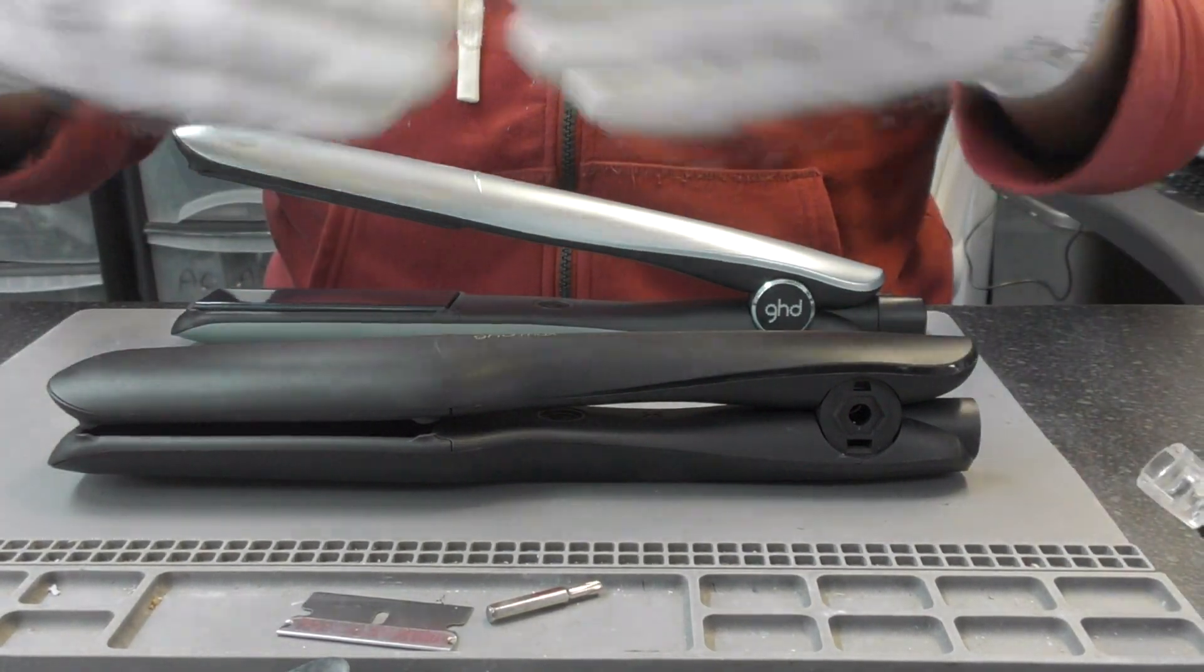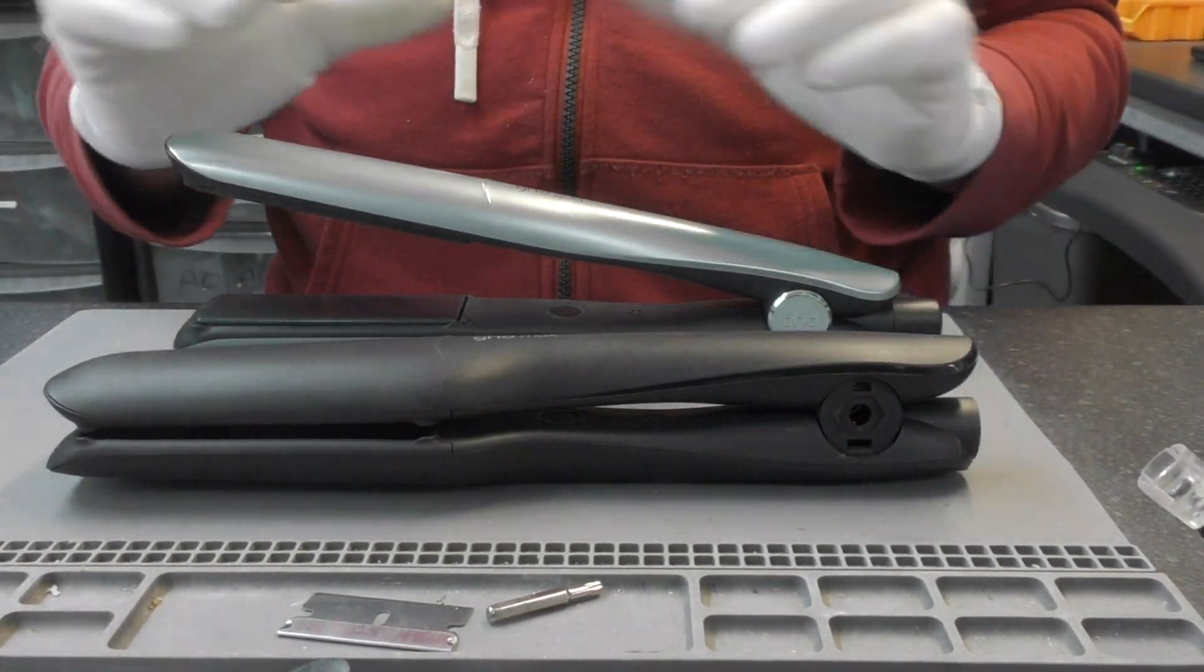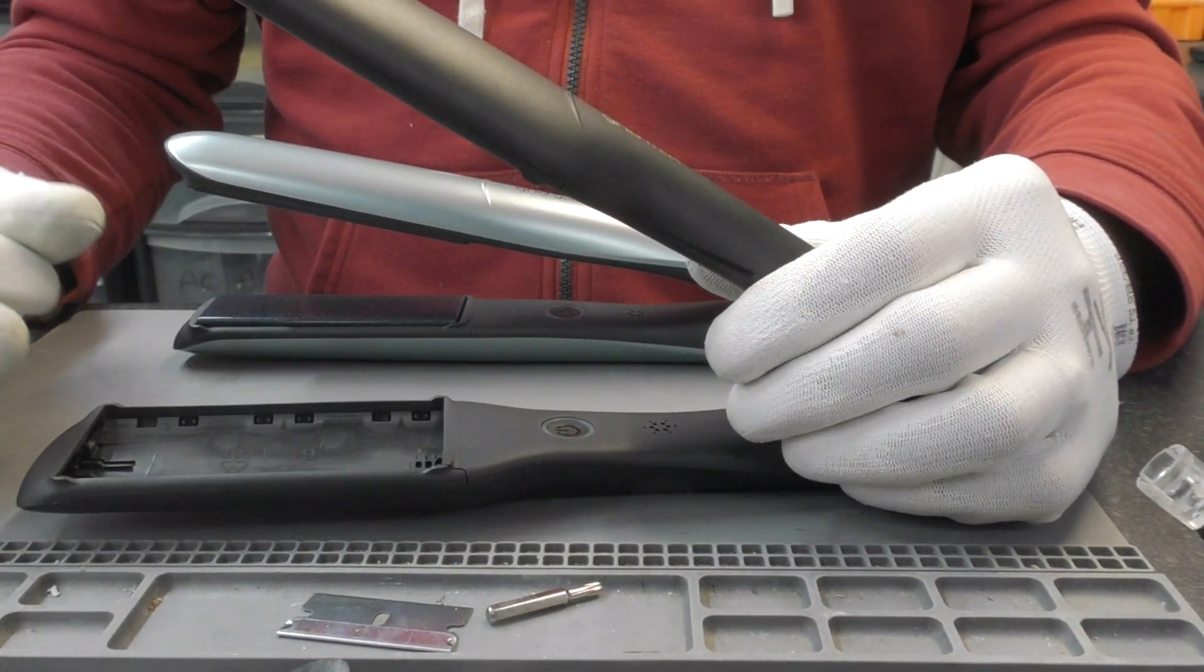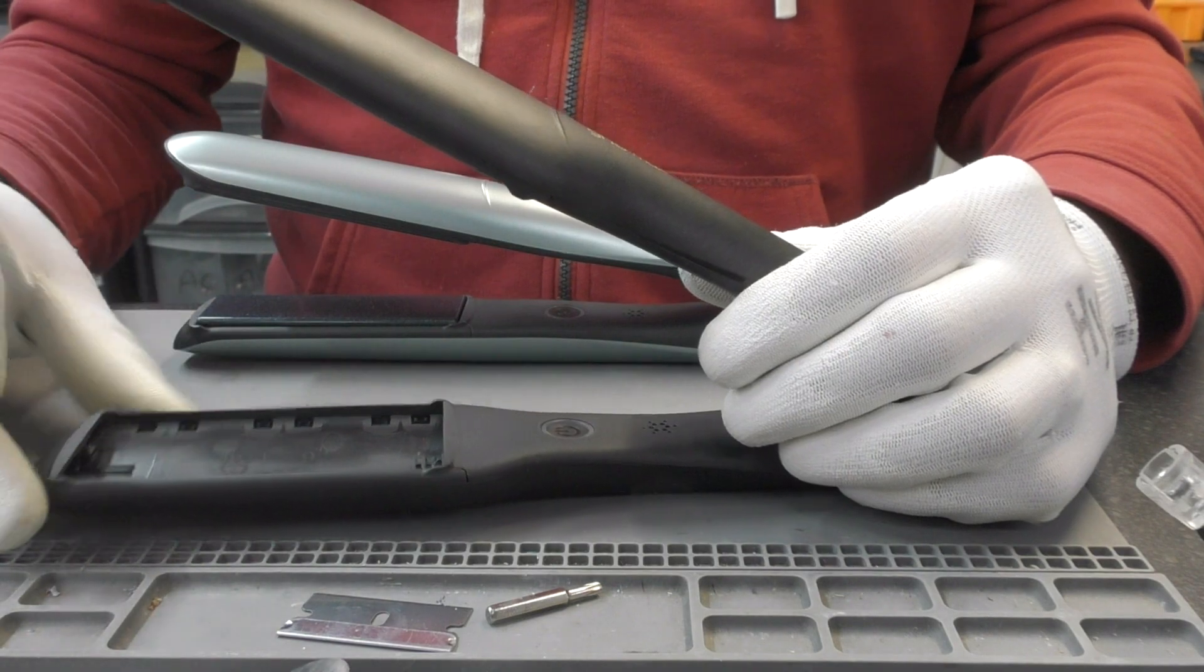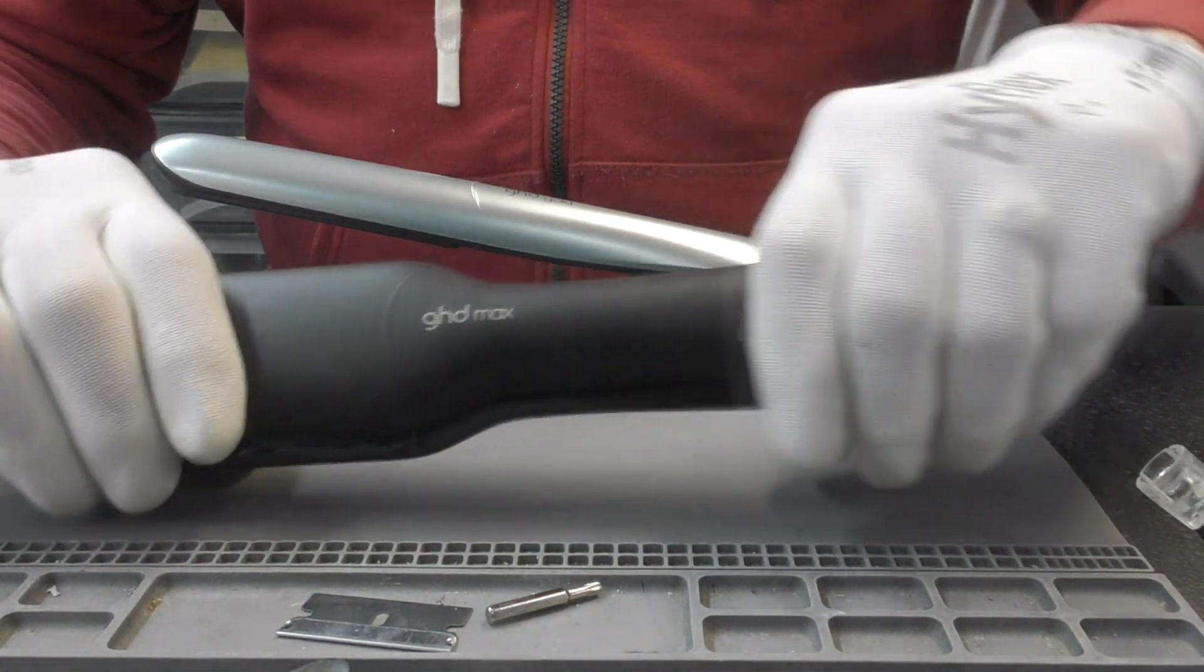Well, I say this model, one's wide, one's normal. The internals and the elements are exactly the same. The only difference is the wider plates. Same size element, just wider plates, and that's pretty much it for the differences.